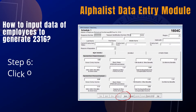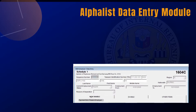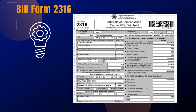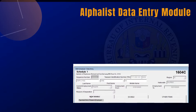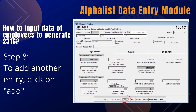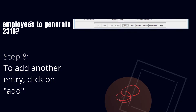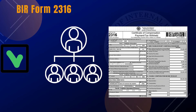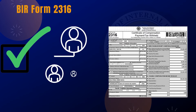Step 6, once done inputting, click on Save. Step 7, to generate the Form 2316, click on the tab Form 2316. Your 2316 will then be generated in Excel format. Step 8, to add another entry for the next employee, click on Add as in Step 4 and proceed until Step 7. Once everything is inputted, you're done generating the 2316 of all your employees.